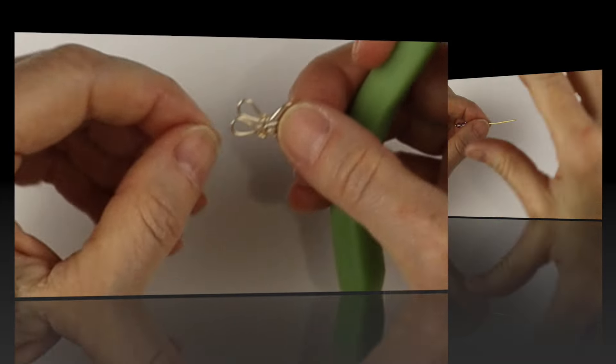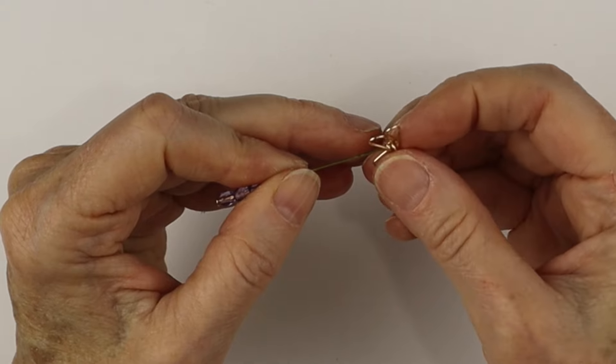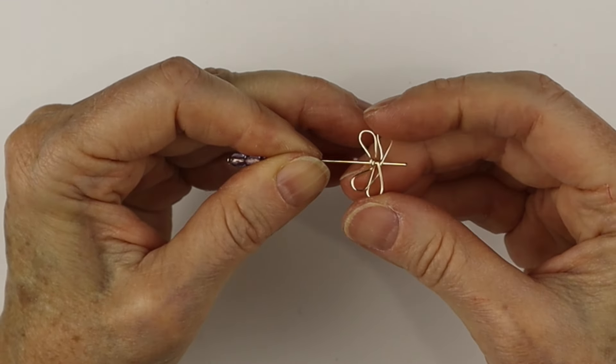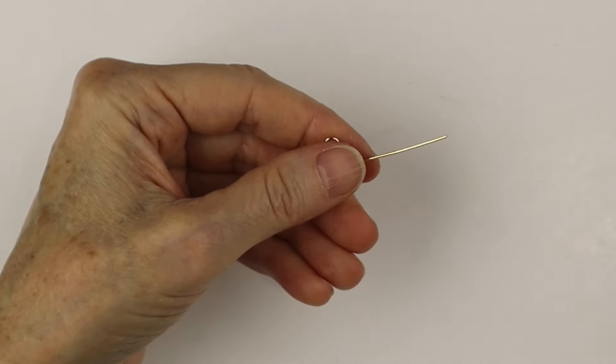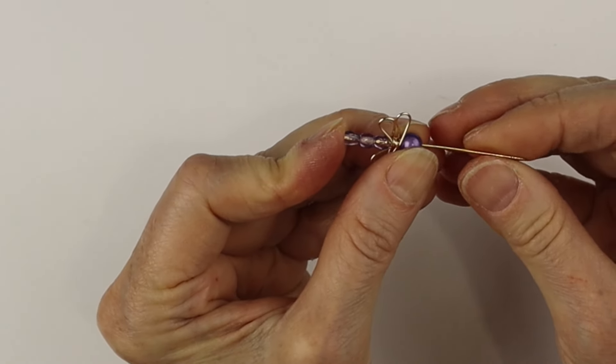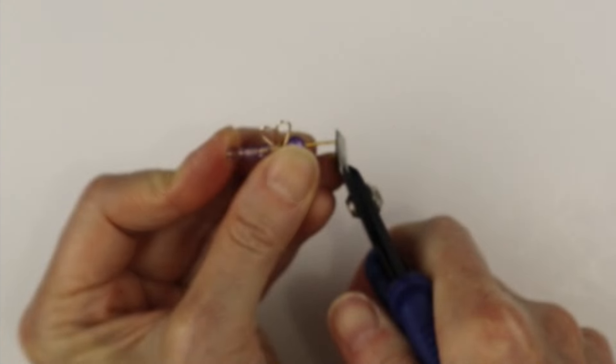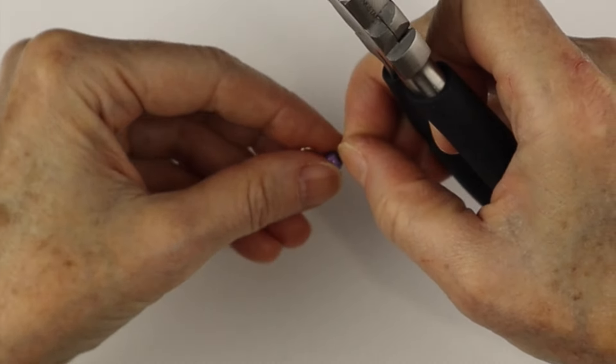We've got a few tiny little faceted beads on the head pin. They're 4 millimeter. We're going to slide on those wings right on the head pin, and then a 6 millimeter miracle bead for the head. Hold them so they're tightly together; you don't want any gaps. Cut it to about three-eighths of an inch.